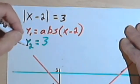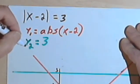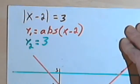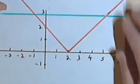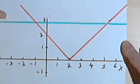And then we're going to enter under y sub 2, which I've done in green, the right side of the equation. So I've got y sub 2 equals 3. And then if you graph it, you're going to get a graph that looks something like this.